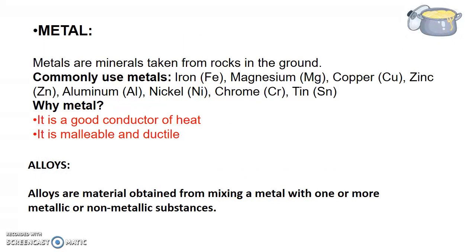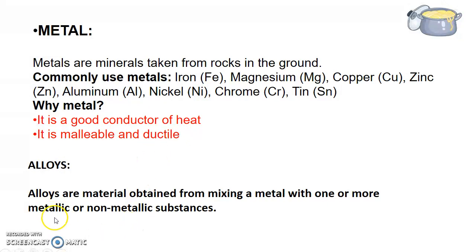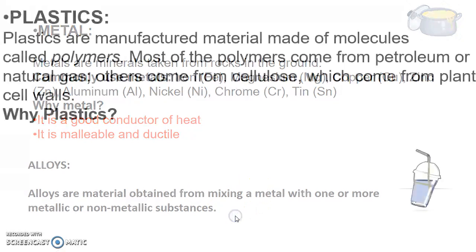Metals are made of minerals taken from rocks in the ground. Commonly used metals include iron, magnesium, copper, and zinc. We use metal because it is a good conductor of heat and electricity, and it is malleable and ductile — you can make wires out of it, such as copper wires. Alloys are materials obtained by mixing a metal with one or more metallic or non-metallic substances.